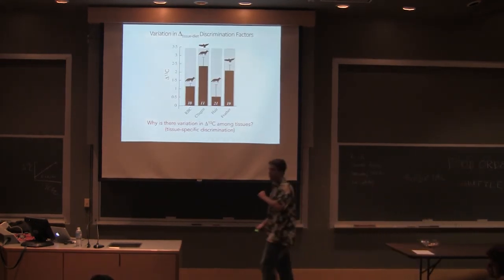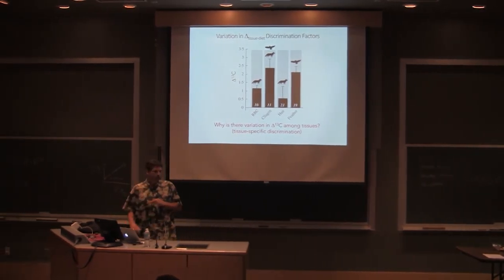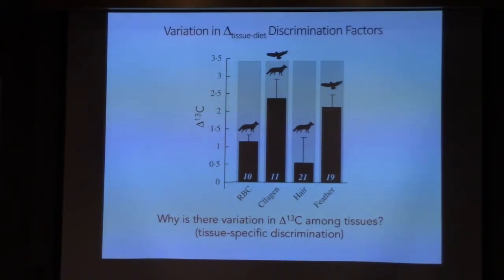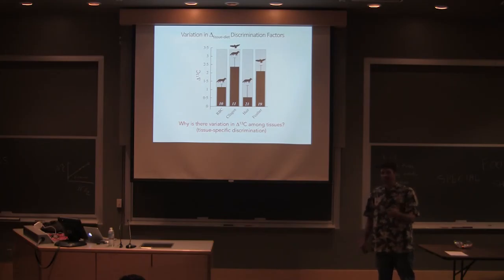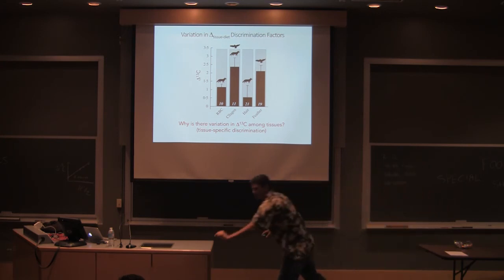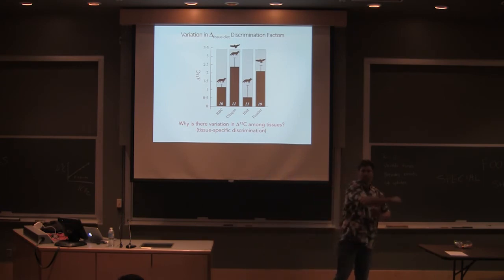And this gets back to your question about variation in tissue specifics. So if you take a mouse and you feed it the same diet its entire life, and then you kill it, which we do a lot of, we do it with CO2 asphyxiation, it's fast and painless. You measure its tissues: bone collagen, blood, muscle, liver, hair. They're all going to have different carbon isotope values. How can that be?